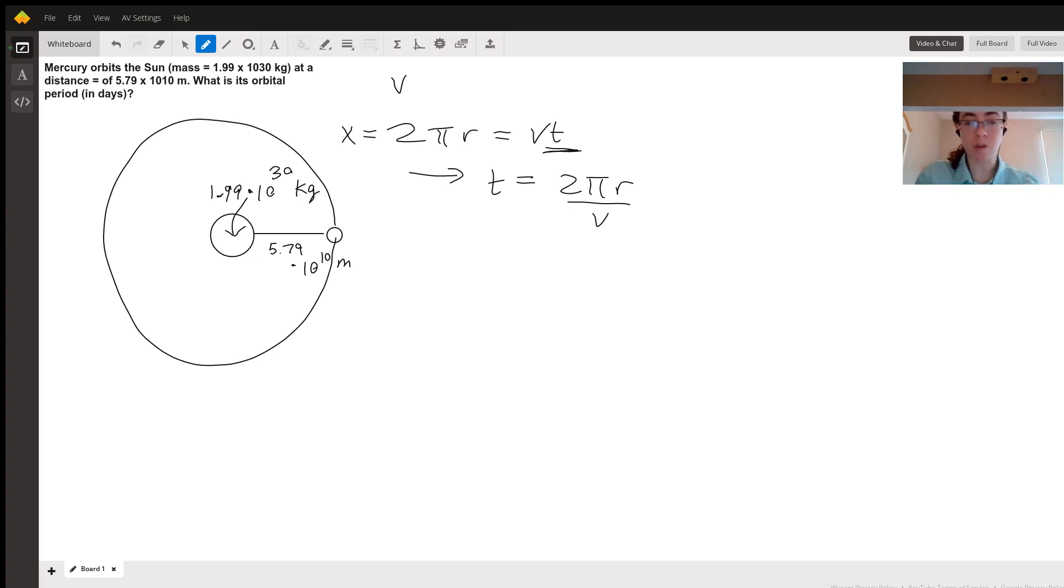In order to find the velocity, we're going to use our centripetal acceleration equations. So we know that we're experiencing Ac is equal to v squared over r. And we know that the centripetal force in this situation is the gravitational force. And so we can set up F equals mv squared over r.